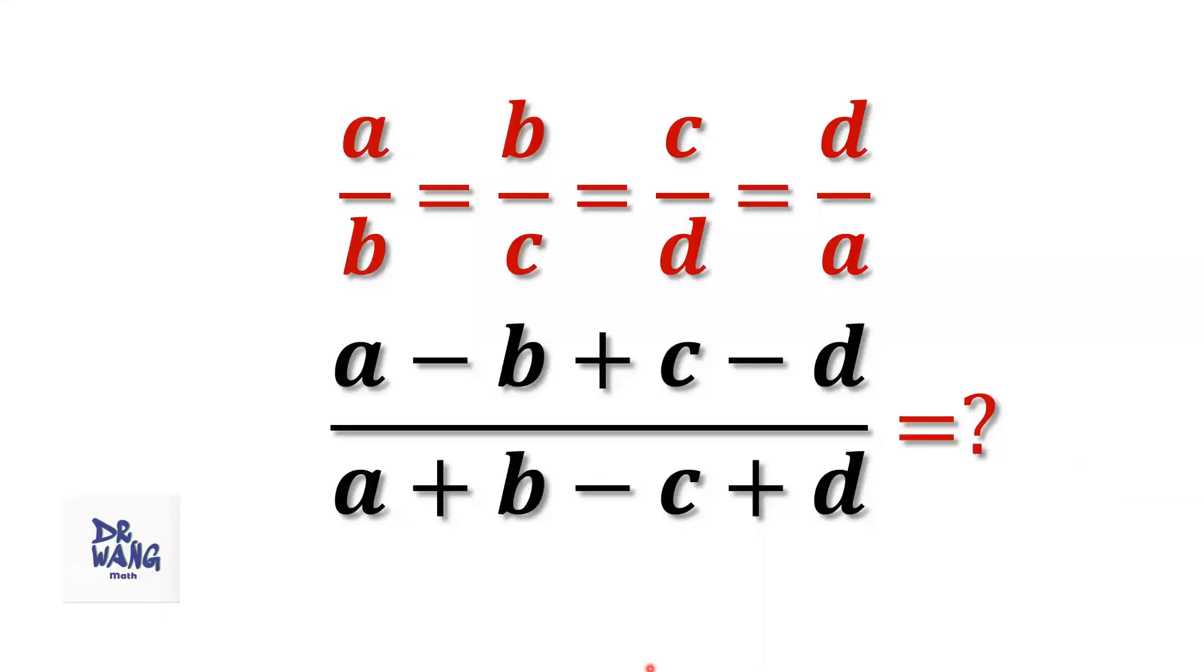Hello everyone, I'm Dr. Wang. Here is the question. If A over B equals B over C equals C over D equals D over A, what is the value of A minus B plus C minus D over A plus B minus C plus D?